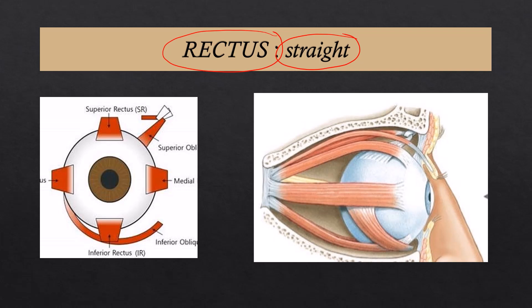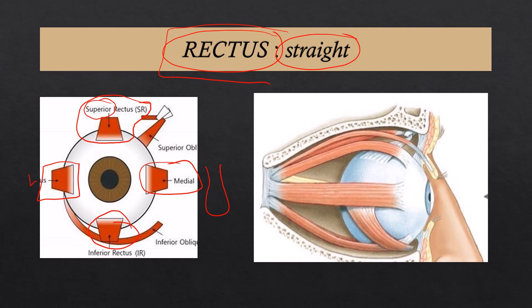The superior rectus sits on top of the eyeball, the medial rectus is situated medially towards the nose, the inferior rectus is below the eyeball, and the lateral rectus is on the lateral aspect. In a sagittal section we can observe the lateral rectus away from the nose, the medial rectus on the opposite side, the superior rectus above, and the inferior rectus below. The oblique muscles can be seen coursing obliquely and will be dealt with in the next part of the video.